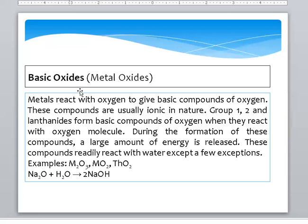Basic Oxide or Metal Oxide: metals react with Oxygen to give a basic compound of Oxygen. These compounds are usually ionic in nature. Group 1A and 2A elements form basic compounds of Oxygen when they react with Oxygen, releasing a large amount of energy. These compounds regularly react with water. For example, Sodium plus water forms Sodium Hydroxide, which is a strong base — therefore its oxide is termed a basic oxide.